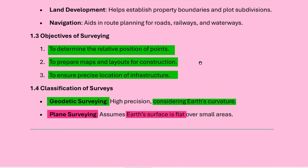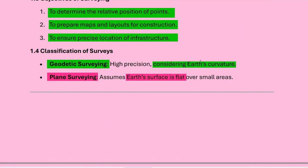Basically, we divide surveying into two basic parts: geodetic surveying and plane surveying. Geodetic surveying has high precision and considers earth curvature. In plane surveying, we assume the earth's surface is flat, and it is used for small areas.